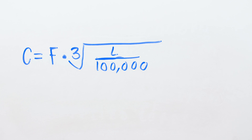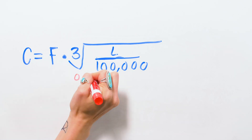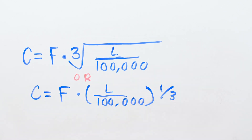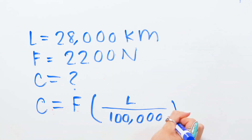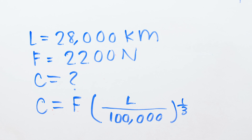So the required dynamic load capacity, C, equals the applied load, F, multiplied by the cube root of the life divided by 100,000. Our application data tells us the desired life and the applied load, so we can solve for the required dynamic load capacity.